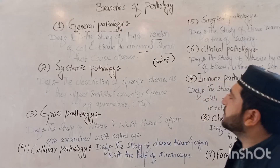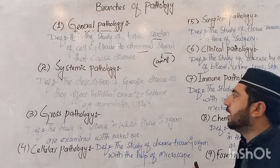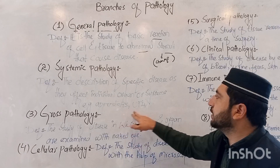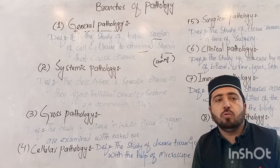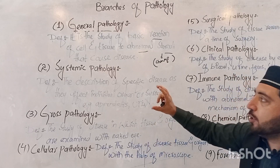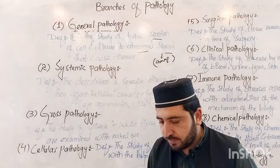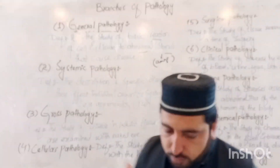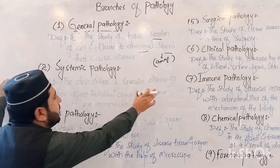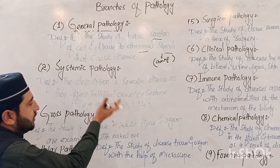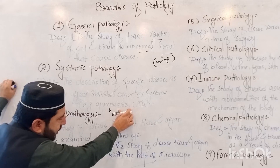Systematic pathology is the description of a specific disease and its effect on an individual organ or system. For example, appendicitis, UTI, or respiratory disease. If you have a specific organ or system study, it falls under systematic pathology.